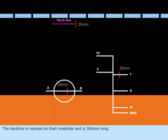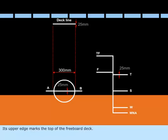The deck line is marked at midships and is 300mm long. Its upper edge marks the top of the freeboard deck. If this line is extended outward, it will cut the outside of the shell plating.